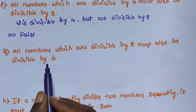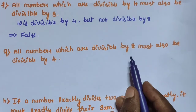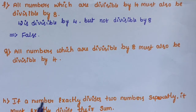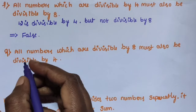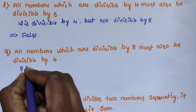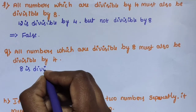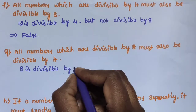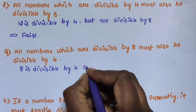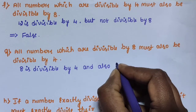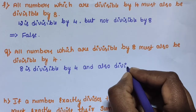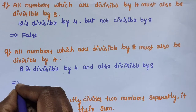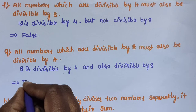Sub-question G: all numbers which are divisible by 8 must also be divisible by 4. This statement is true, because 8 is divisible by 4, and any multiple of 8 is also divisible by 4.